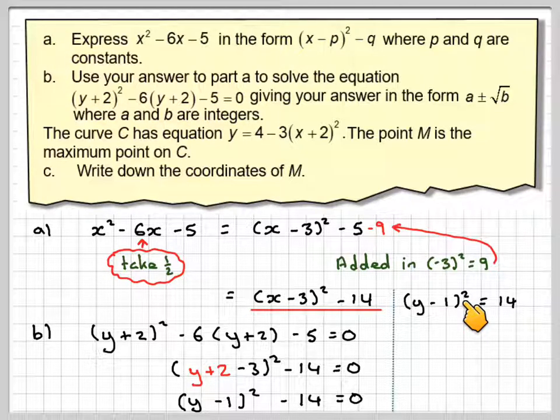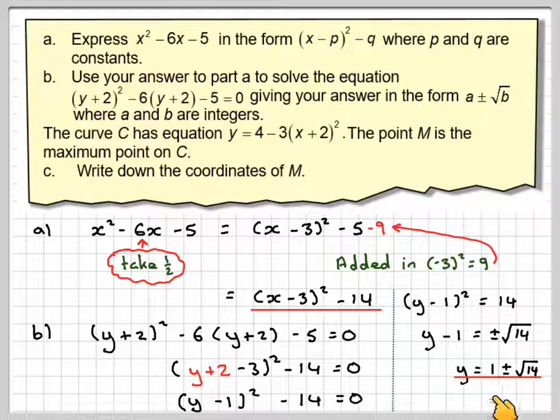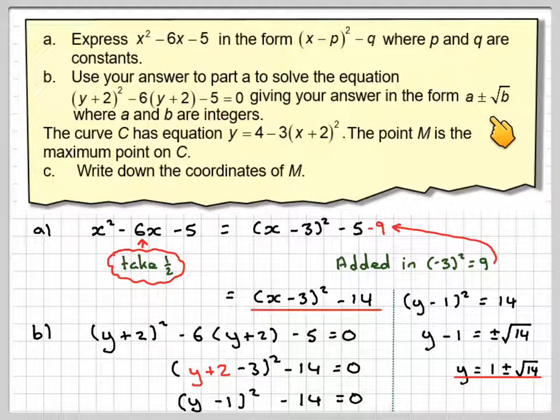The opposite of squaring is to take the square root. But when we take the square root, we must remember we take plus or minus the square root of 14. So this is looking good. And then we need to add 1 to both sides. We've got y = 1 ± √14. It's now in the correct format.